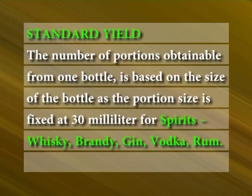Standard yield: The number of portions obtainable from one bottle is based on the size of the bottle, as the portion size is fixed at 30 milliliters for spirits — whiskey, brandy, gin, vodka, rum. Other alcoholic beverages, wines and beers, are sold in units — the containers in which they are packed. Therefore, the potential sales can be calculated without much difficulty.